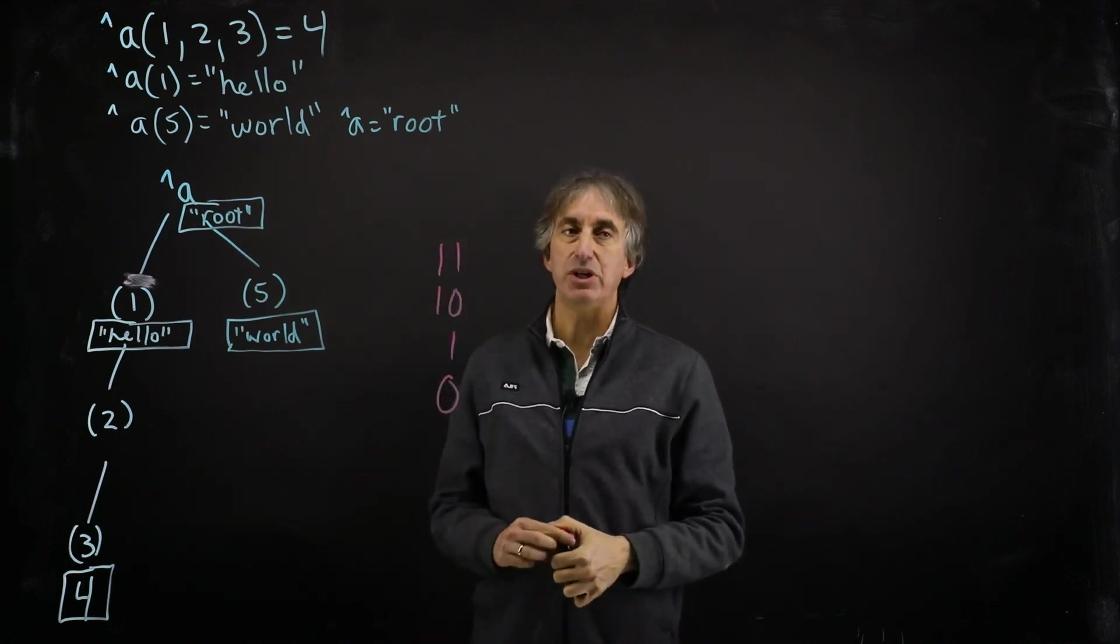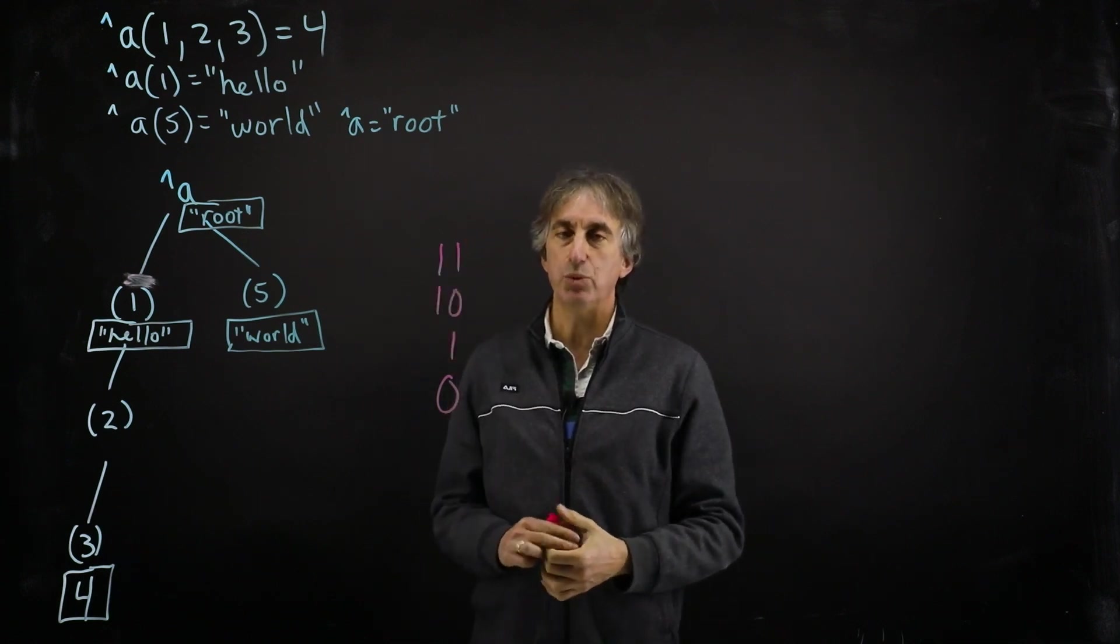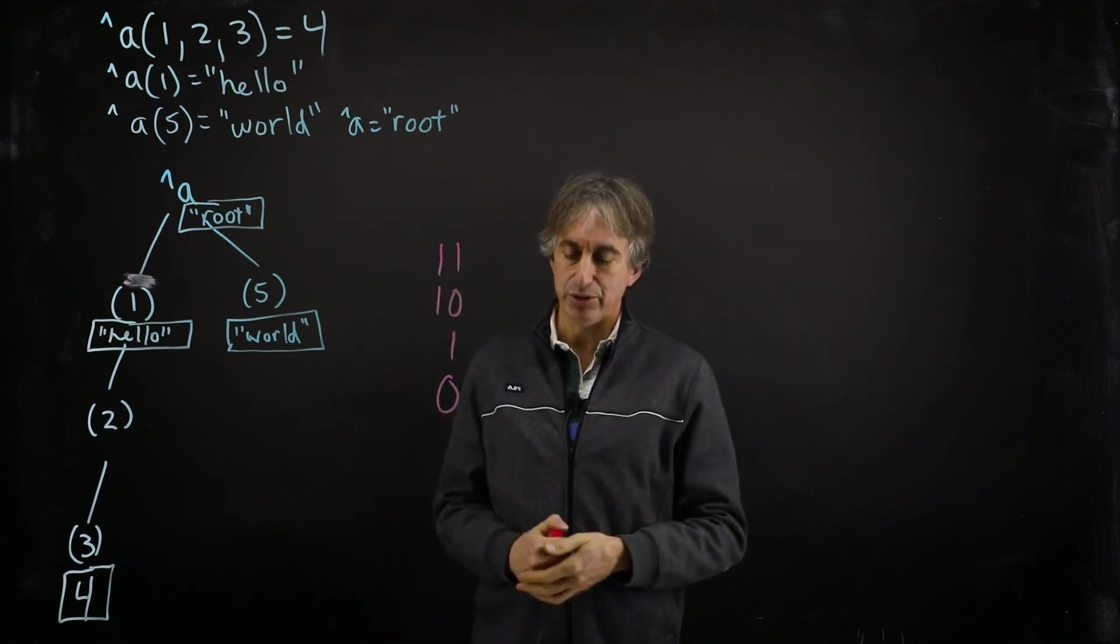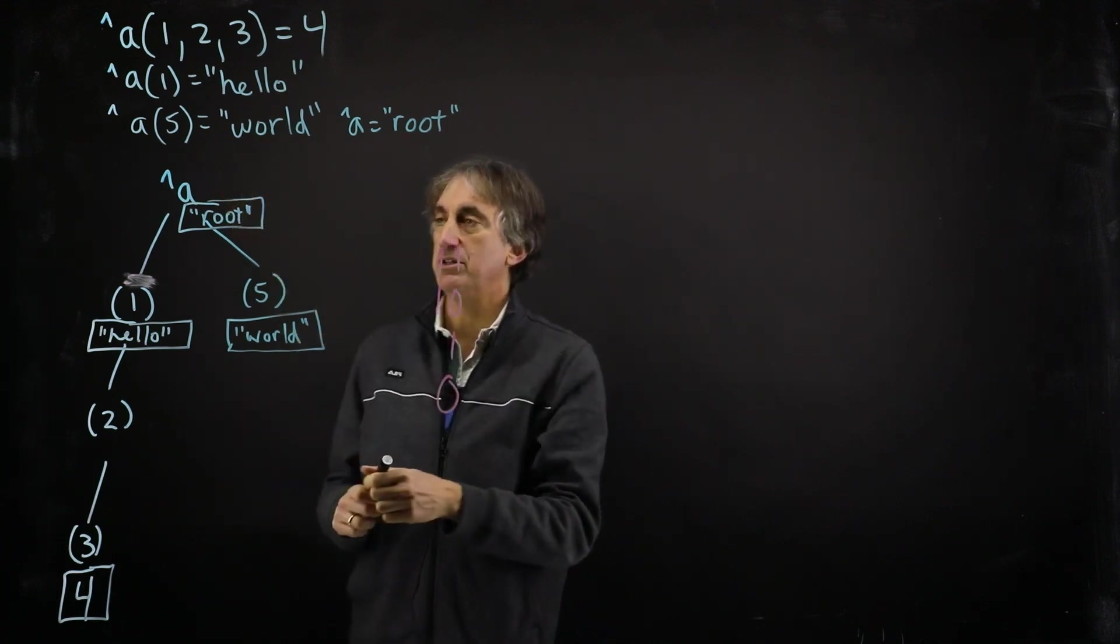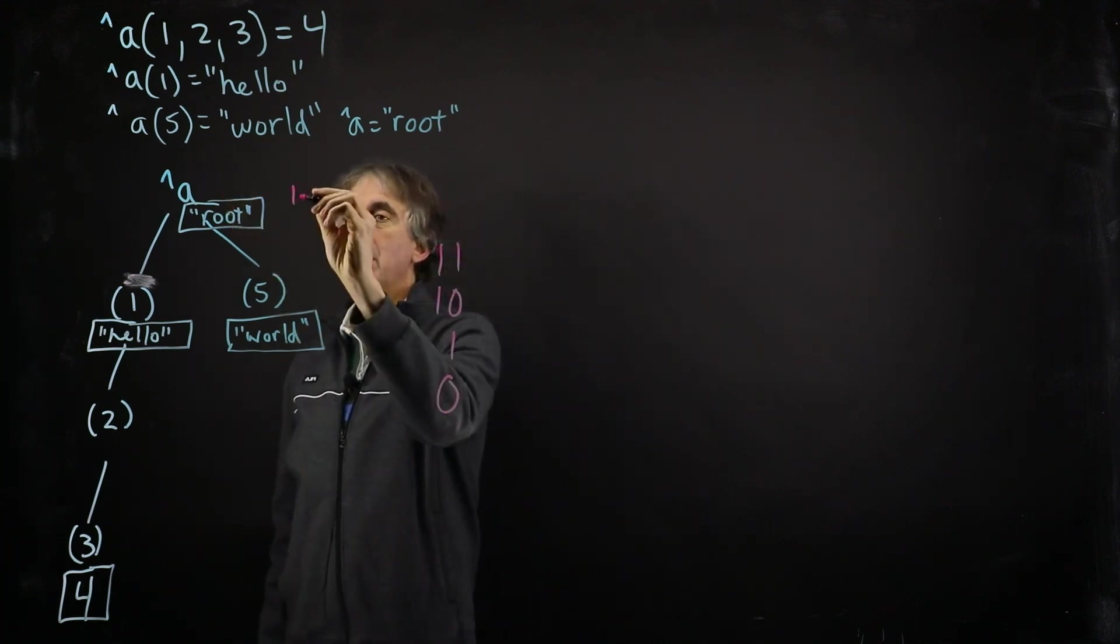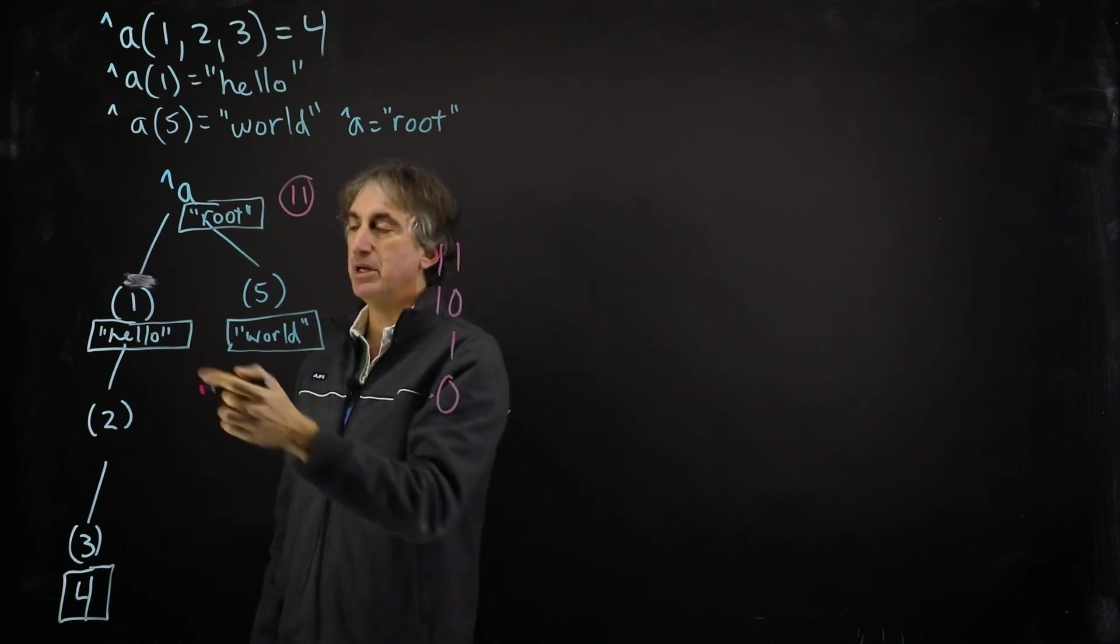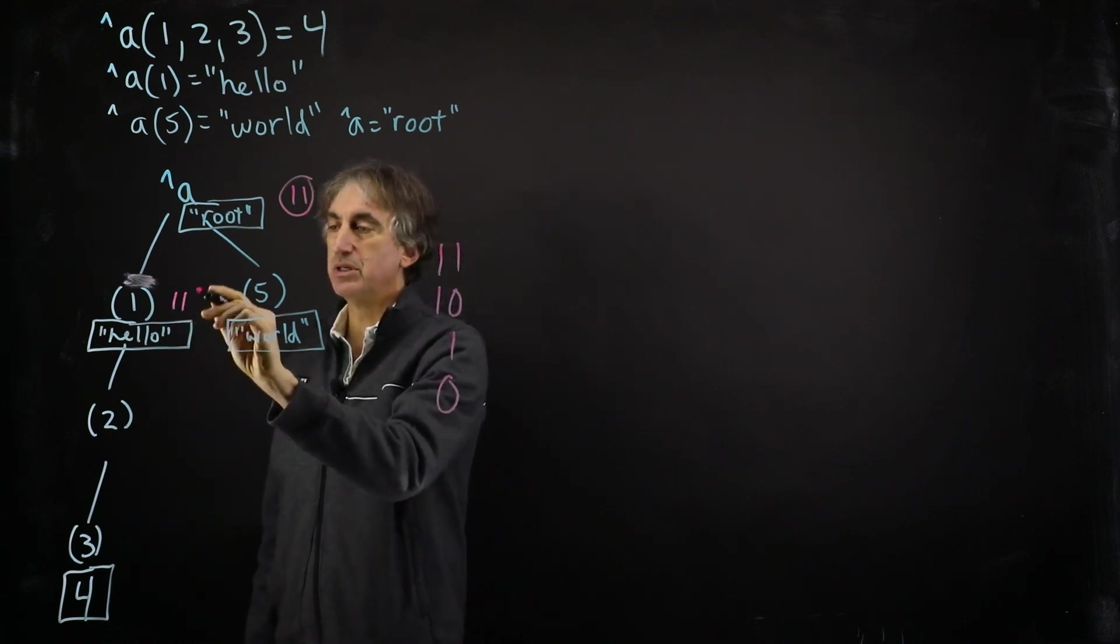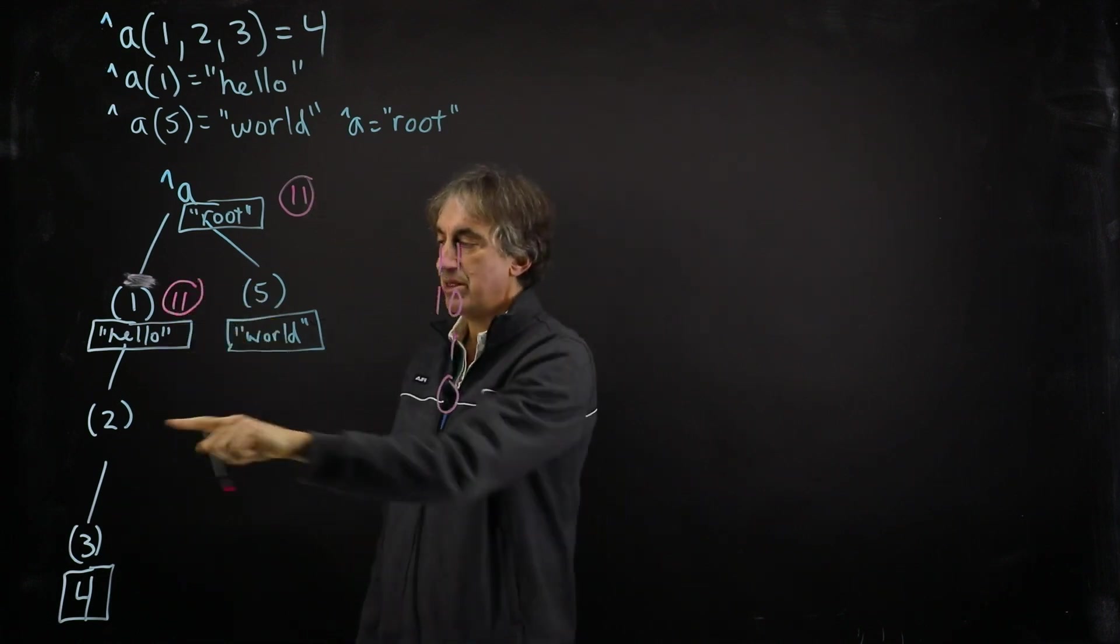If the 10's digit is equal to 1, it means there are descendants. If the 1's digit is equal to 1, it means there's value stored there. So if we called isDefined on the root, it would return an 11, meaning there's descendants and there's a value. Same thing for this node. There's a value. There's also descendants.